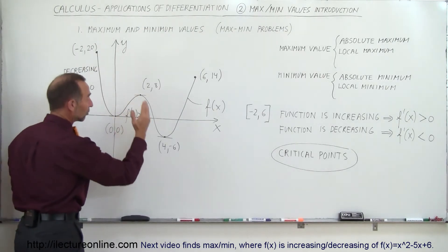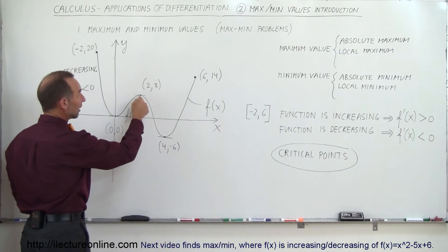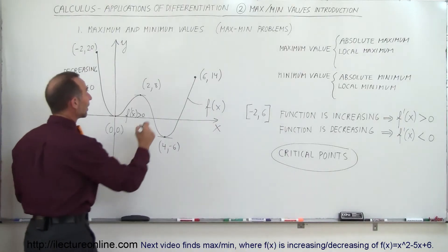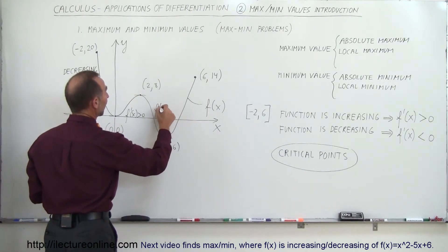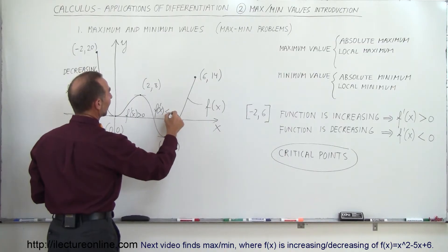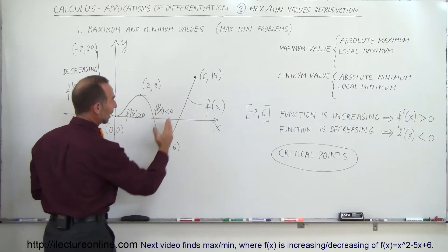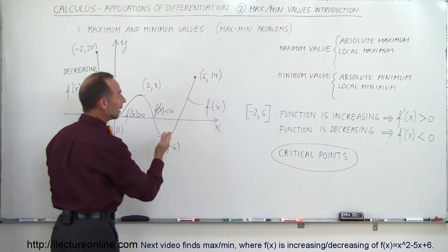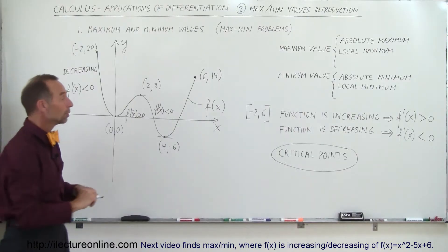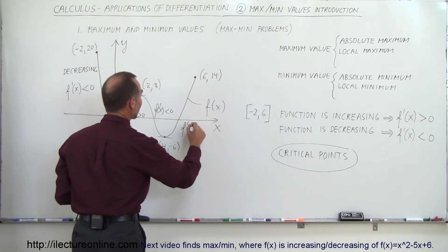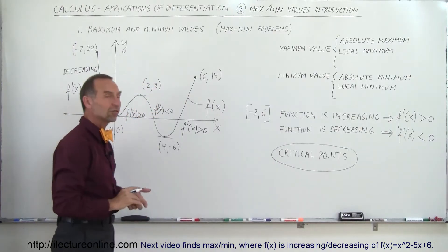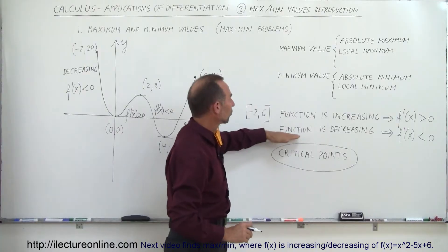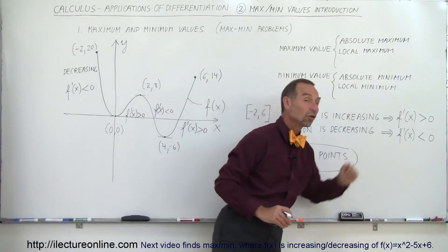Going from x equals 2 to x equals 4, x is getting bigger but y is getting smaller, so the function is decreasing and f prime of x is therefore less than 0. Finally, from x equals 4 to x equals 6, the function is increasing as y is getting bigger, meaning the slope is positive, or f prime of x is greater than 0. To summarize: if the function is increasing, the derivative is greater than 0; if the function is decreasing, the derivative is less than 0.